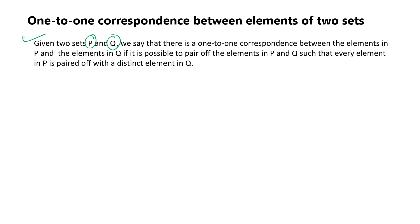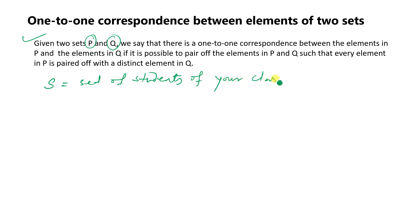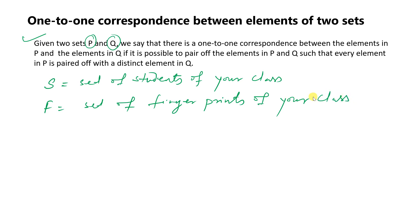Example: let S be the set of students of your class and F be the set of fingerprints of your class. There is a one-to-one correspondence between S and F because for each student there is exactly one corresponding fingerprint, and both sets have the same number of elements.